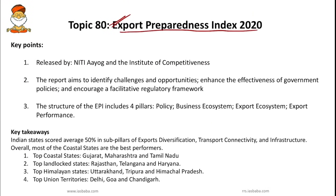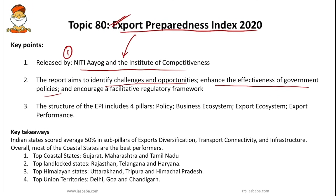Finally, the Export Preparedness Index 2020, released by NITI Aayog in 2020. This Export Preparedness Index is released by NITI Aayog and the Institute of Competitiveness. It is a report which aims to identify challenges and opportunities, enhance the effectiveness of government policies, and encourage a facilitative regulatory framework. There are four pillars under this Export Preparedness Index: first, Policy; second, Business Ecosystem; third, Export Ecosystem; fourth, Export Performance. A simple question could come asking which are the four pillars under this Export Preparedness Index. This report examines export preparedness and performance of Indian states.